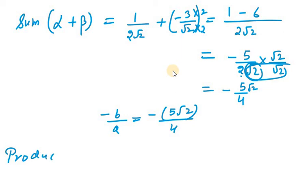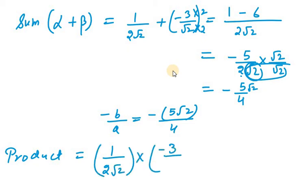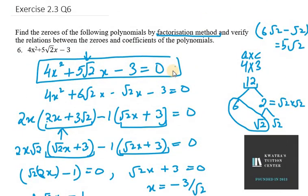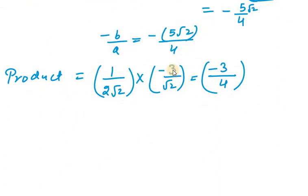Now we need to find the product of roots, alpha times beta. Alpha is 1 over 2 under root 2 and beta is minus 3 over under root 2. So the product is minus 3 over 2 under root 2 times under root 2, which equals minus 3 over 4. To verify by C over A: C is minus 3 and A is 4, so C over A equals minus 3 over 4. Left hand side equals right hand side, hence proved for question number 6.